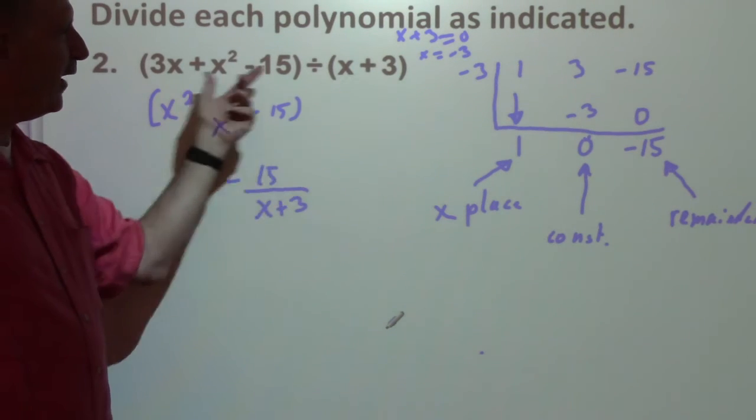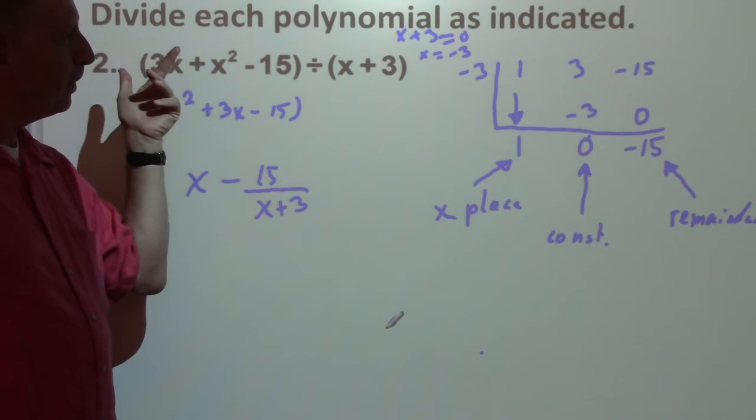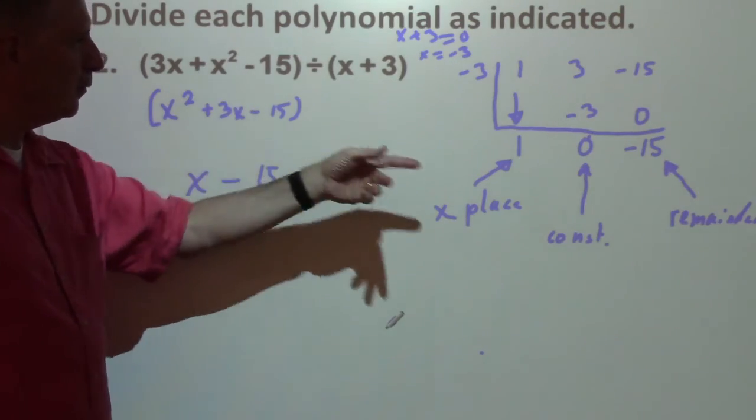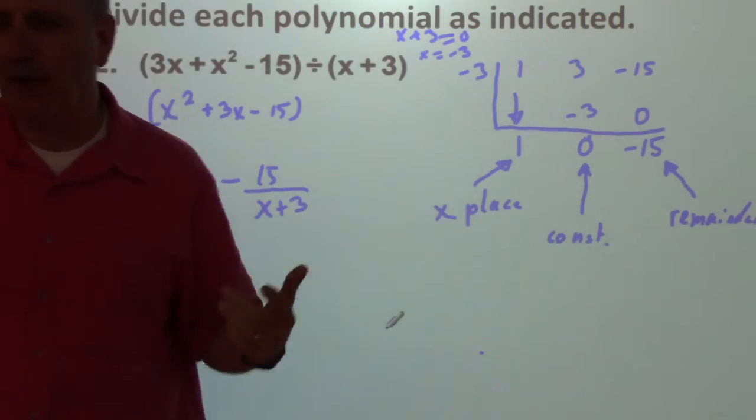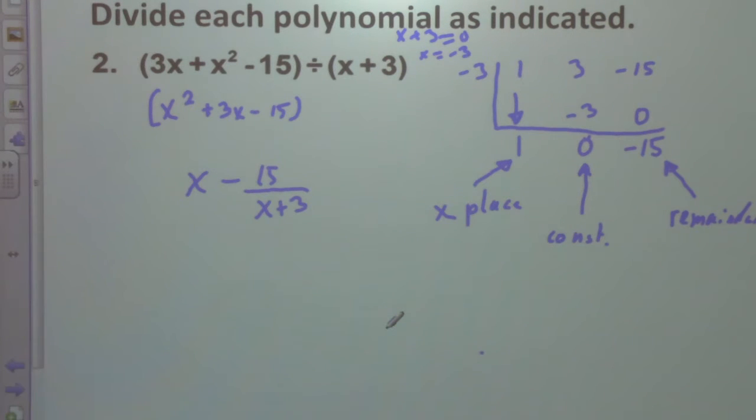We should be able to multiply our quotient by our divisor and then we would get our dividend. Now, this, it can become a little complex. Is x plus 3 a factor of this up here? Yes. No, it is not. What does it take to be a factor? It takes a remainder of 0. So x plus 3, therefore, is not a factor of our dividend.